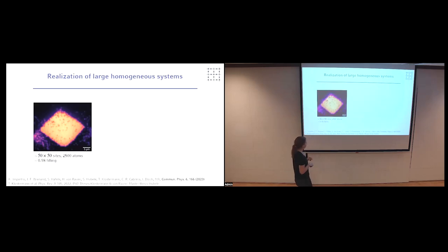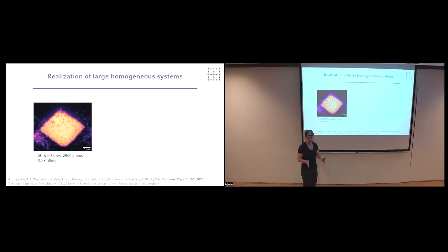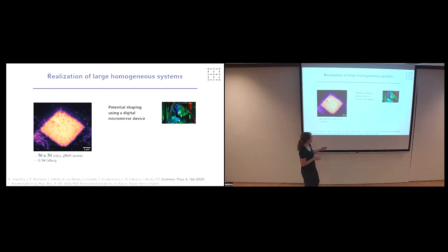Here's a picture of our cesium quantum gas microscope and where we are right now. We have generated a box potential — all the black regions where there are no atoms are blocked by repulsive walls. We project a potential like a bucket potential into the atomic plane where the walls block where the atoms can go. So instead of having a harmonic trap, it's really just a sharp edge. On top of that, we use a device called a digital micromirror device — an array of about a million tiny little mirrors that you can switch on and off, so you can change the intensity profile.